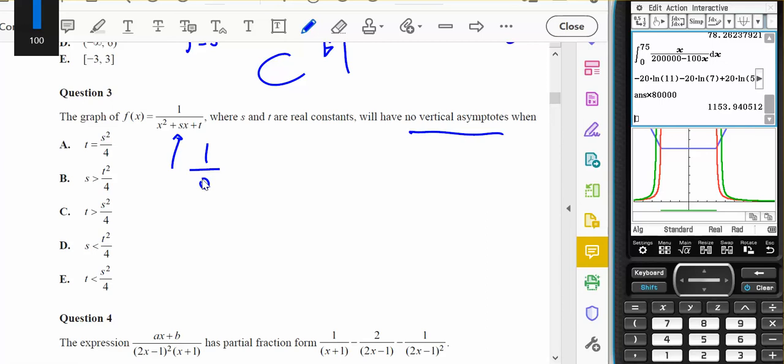So I want the discriminant of my denominator to be less than zero. I want s squared minus four times one times two to be less than zero. So which one of these is correct?